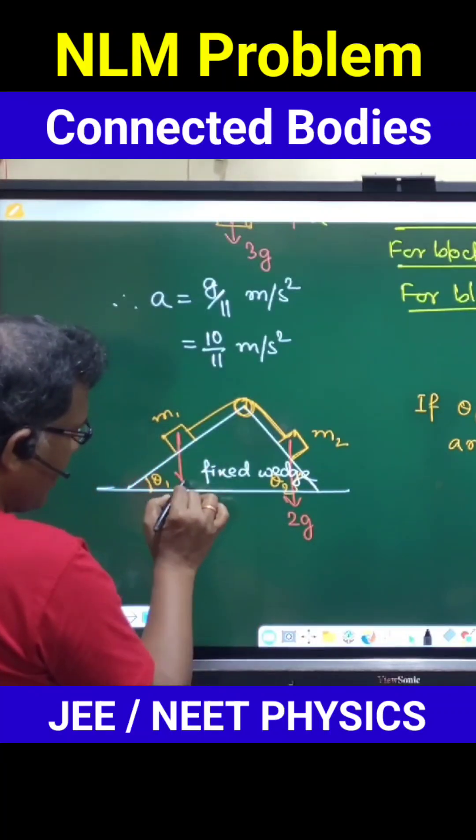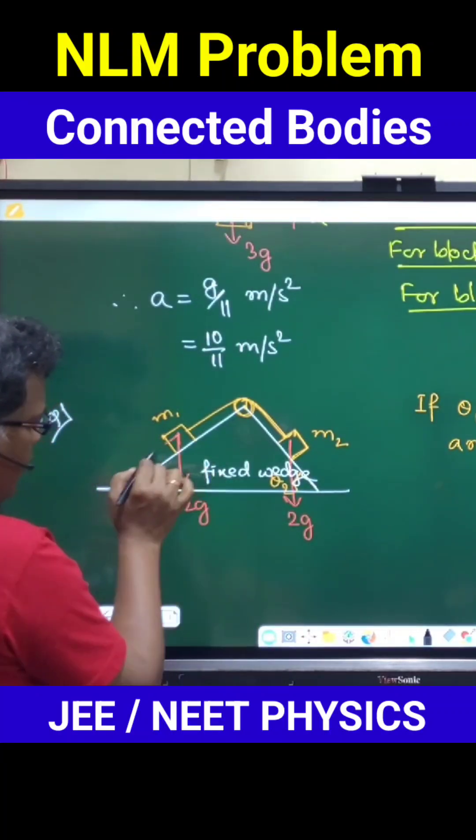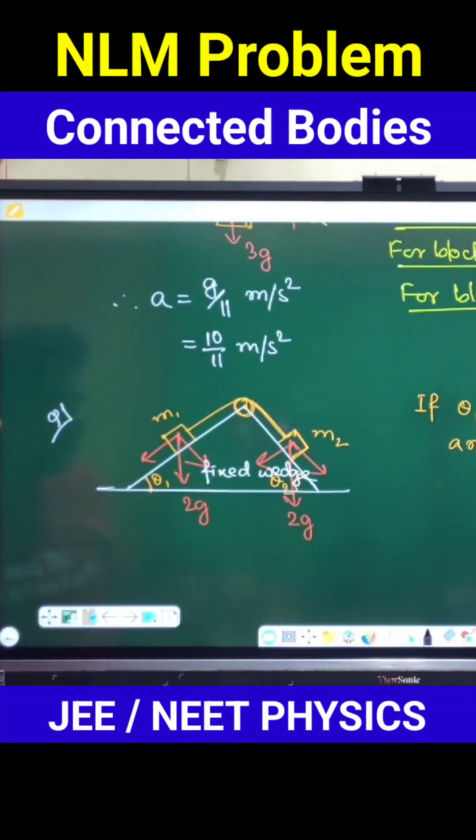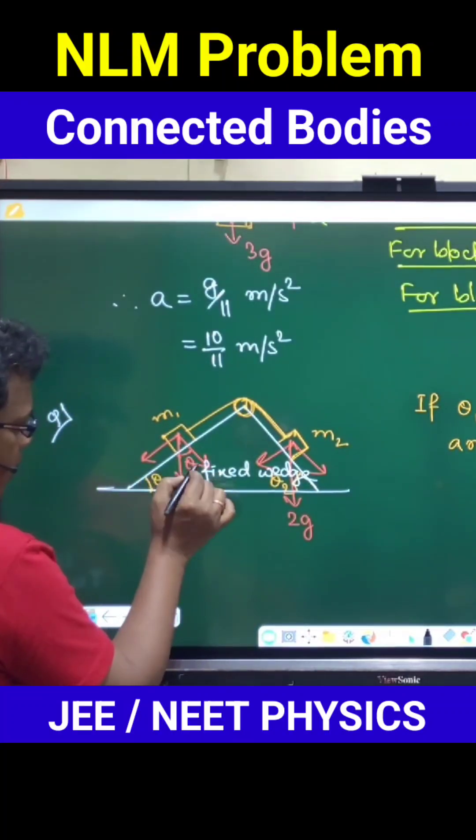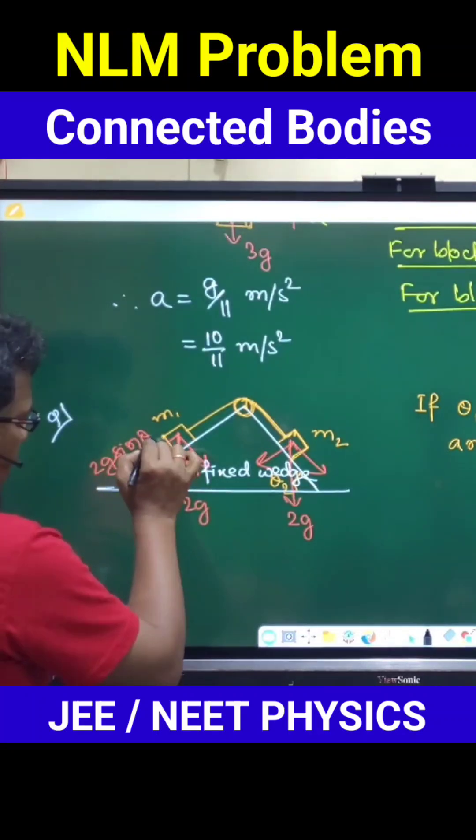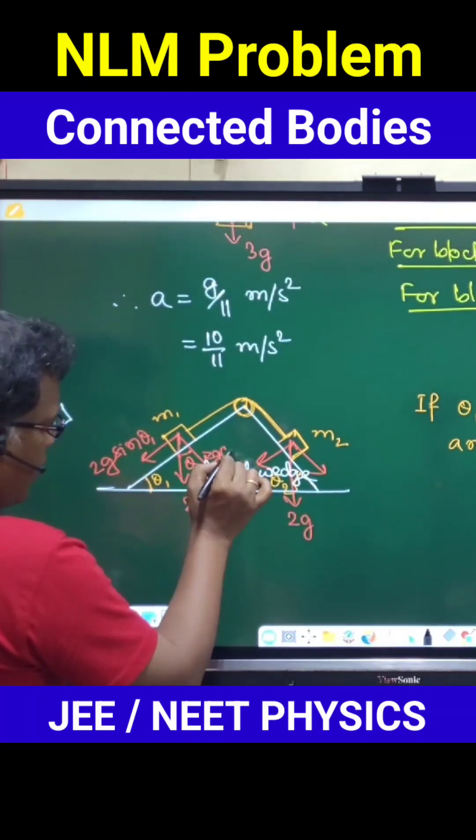2g forces for both of them will act vertically downward, so that 2g forces need to be resolved on both of them. Geometry wise, if this is theta 1, this one will be theta 1, so this one will be 2g sin theta 1 and in this direction it will be 2g cos theta 1.